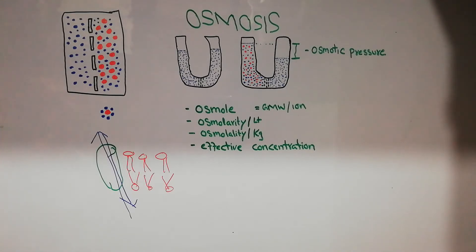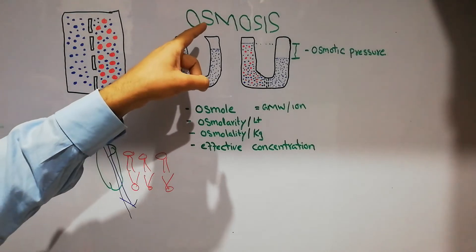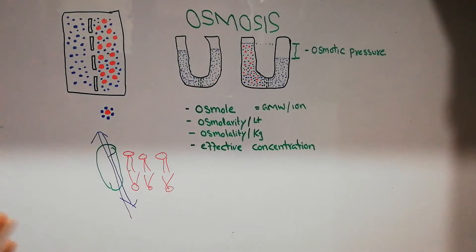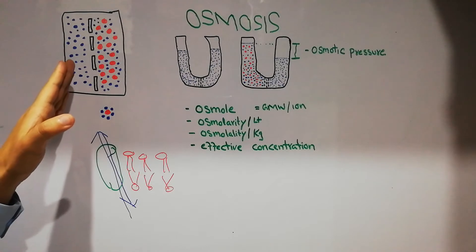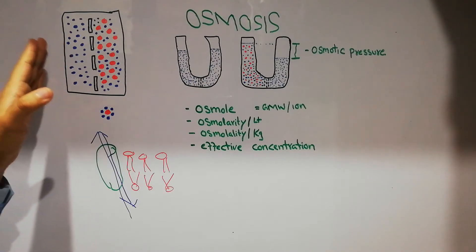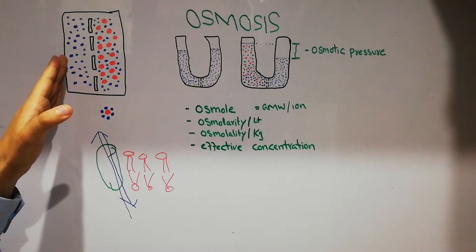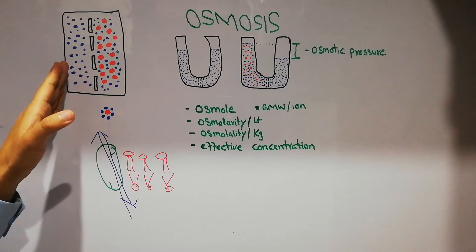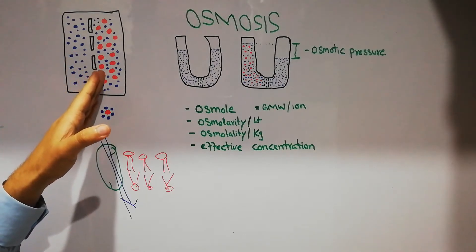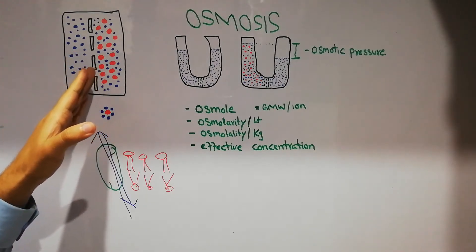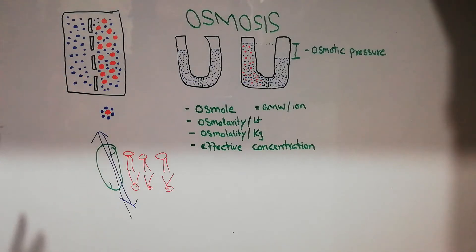Osmosis is nothing but the movement of water from an area where it is high in concentration to an area where it is low in concentration, through a semi-permeable membrane. So osmosis is basically the movement of water.